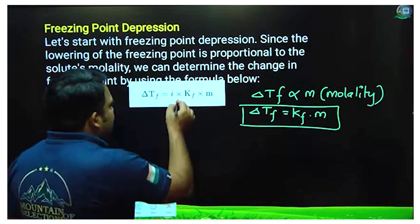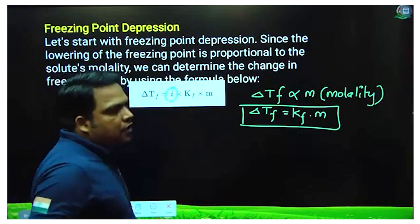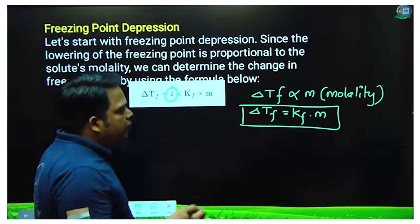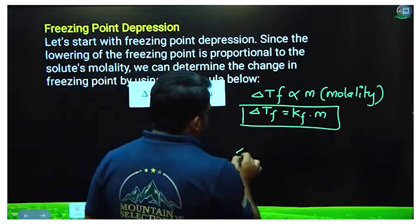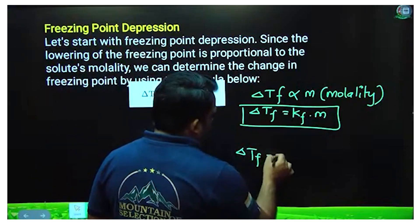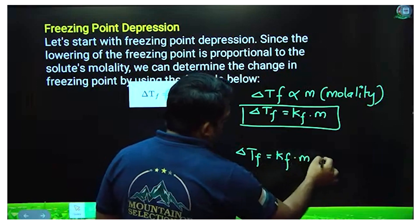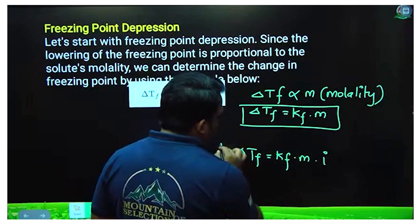Sometimes when we need to use the Van't Hoff factor, we will add it to the formula: delta Tf equals Kf into m into i. When do we use this?